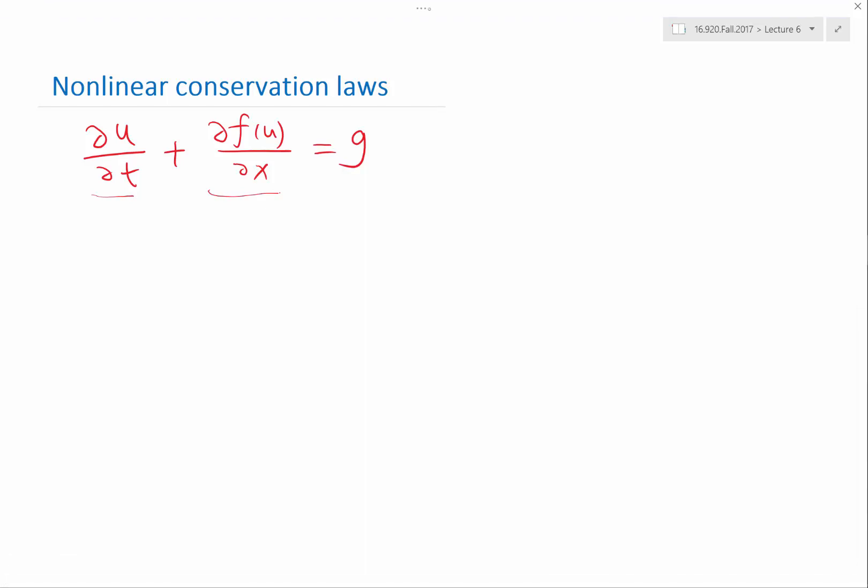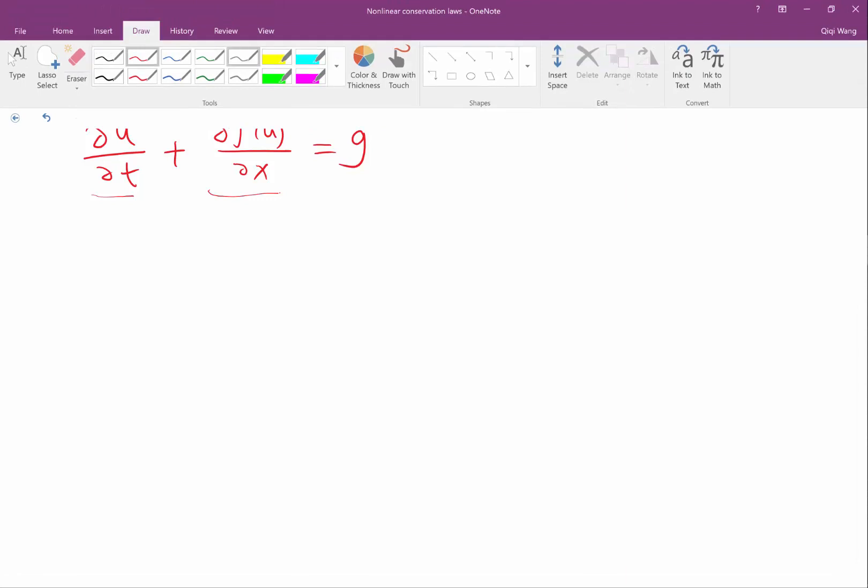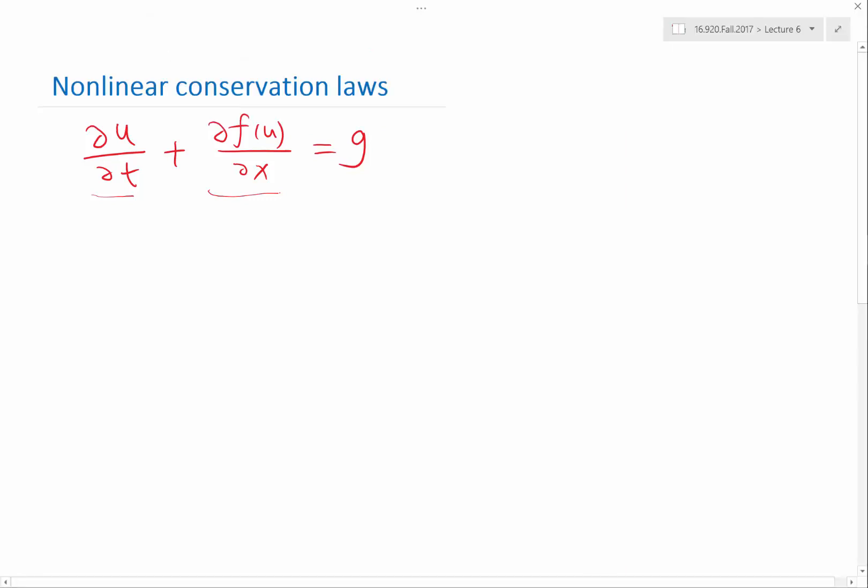So if I write a multidimensional version of the nonlinear conservation law, let me write the most general form. The most general form is the derivative of a vector that can be multiple numbers. It doesn't have to be even a vector that has the same dimension as the spatial dimension will be considered.